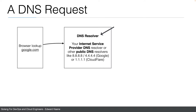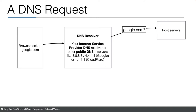This DNS server doesn't immediately know where to find the IP address of google.com, so it will have to go to something called the root servers. All DNS resolvers have these root servers configured in their settings — a config file with the IP addresses of the root servers. These are the IP addresses that need to be known to start DNS resolving. The DNS resolver will go to one of these root servers and ask what it knows about google.com, or just .com.